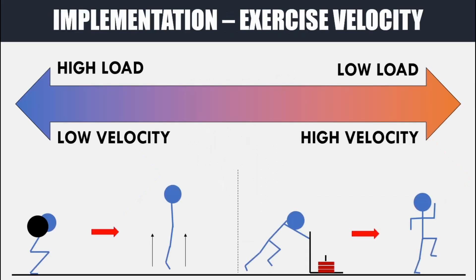We will now cover what factors need to be considered when using post activation potentiation. The first factor is exercise velocity. We ideally want to select two exercises which contrast each other in velocity and load — one exercise should involve higher loads and therefore slower velocities, while the other should involve little or no load and therefore higher velocities. For example, the back squat to vertical jump pairing, or a heavy sled push used to potentiate sprint performance, where the sled push acts as the conditioning exercise and the sprint is the high velocity power exercise. This same principle should be applied with any exercises to maximize the PAP effect.